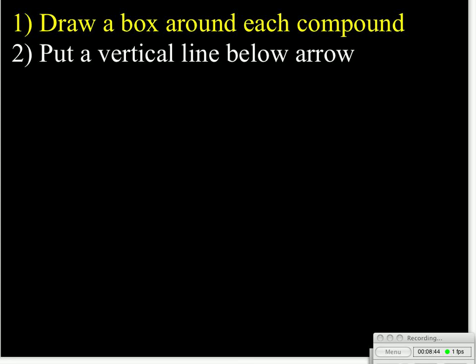Our second step will be to put a vertical line below the arrow, because this vertical line is going to separate the before and after. Over on the left-hand side will be all of our reactants, and that's everything we've got before the reaction takes place, and everything on the right-hand side will be what we have after the reaction takes place. So it's handy to draw that vertical line so we can keep the two straight.